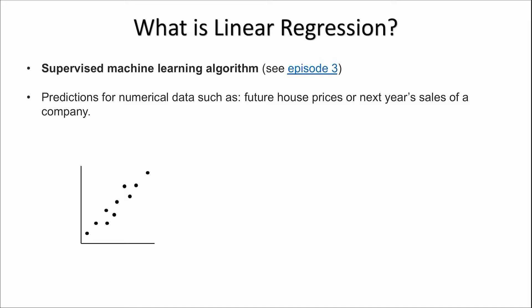Let's say we were to take a sample of houses and plot the house size in meters squared against the house price. We can see that this data follows a roughly linear relationship, because we can draw a line through the data points and it seems to capture the relationship quite well. So this would be considered linear and an appropriate dataset to apply linear regression to.